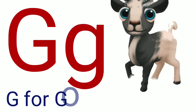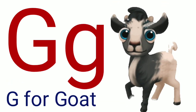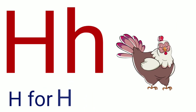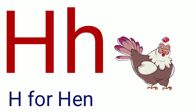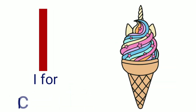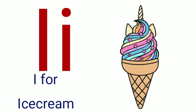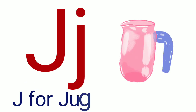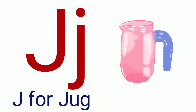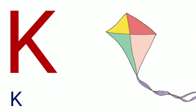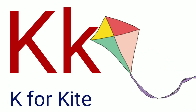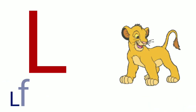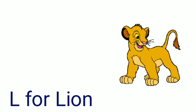G for Goat, H for Hen, I for Ice Cream, G for Jug, K for Kite.